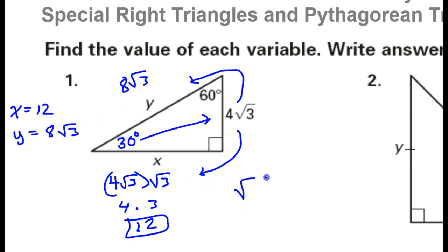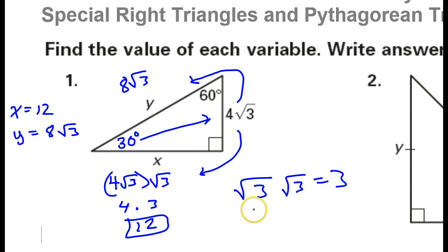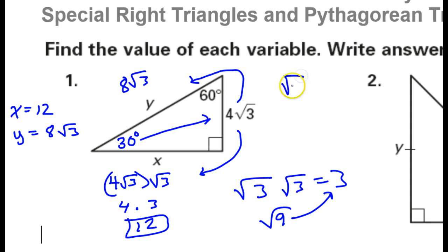By the way, this is going to come up a lot — when I say radical 3 times radical 3 is 3. Radical 3 times radical 3 is radical 9, but the square root of 9 is 3. I've internalized the fact that if I have a radical times itself, that number is going to come out.